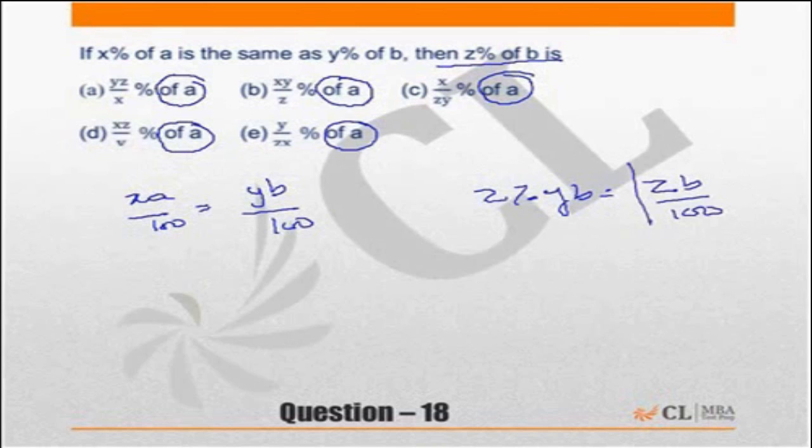Now when you look at this equation and the choices, z is available in all the choices, so we will not worry too much about z. And b is not in any of the choices, so we need to replace b. This tells us that b is equal to 100xA upon y. In any case, 100 cancels on both sides.